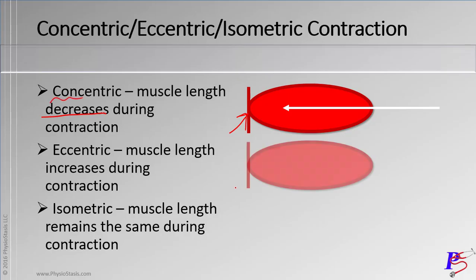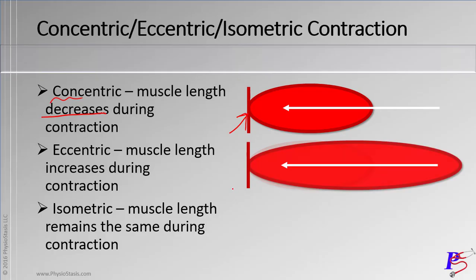The next type — we start with this length, and again we want to contract the muscle, we want it to move in the direction of the white arrow. However, during this contraction, what happens is the length of the muscle is actually increasing. So we call this type of contraction an eccentric contraction.